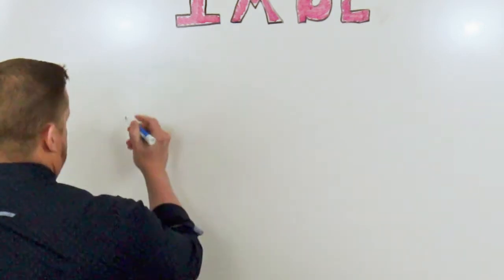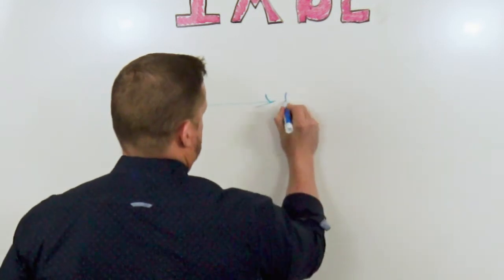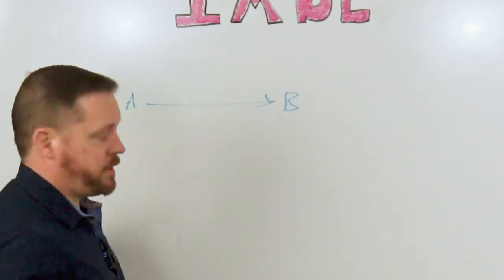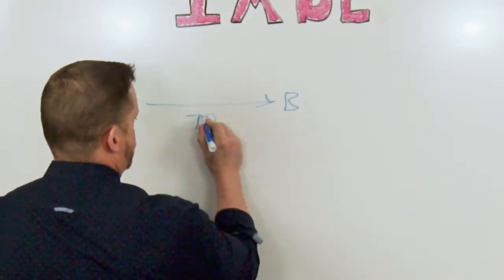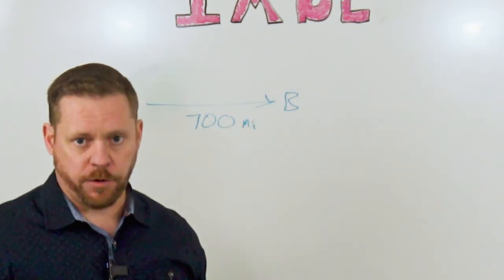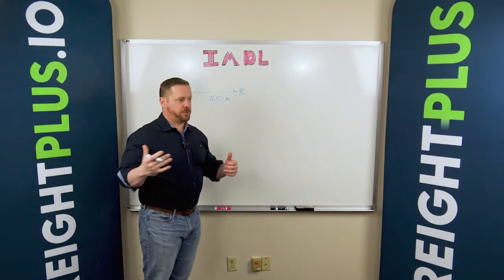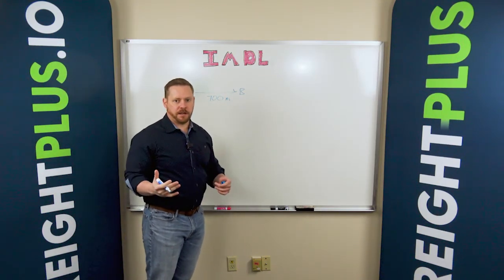to the length of haul. So if you're shipping product from location A to location B, we typically want to see something that's greater than 700 miles in length. Now there are exceptions to every rule, but that's a good rule of thumb. If I'm shipping from, say, New Jersey to Texas, that'd be a really good candidate for an intermodal ship.